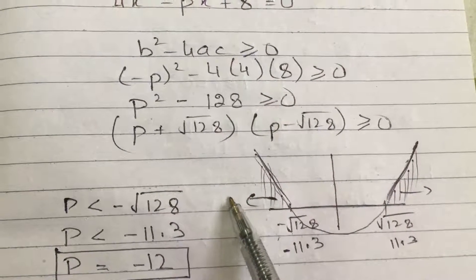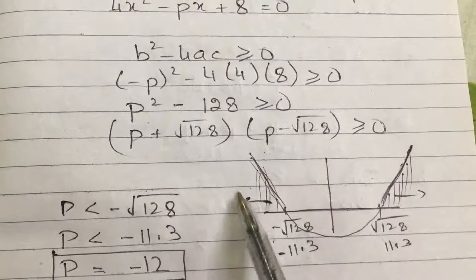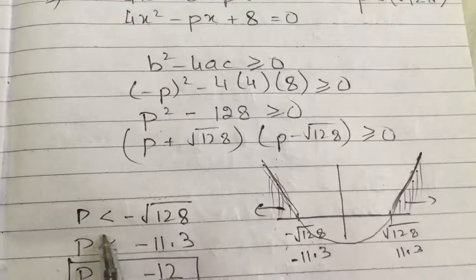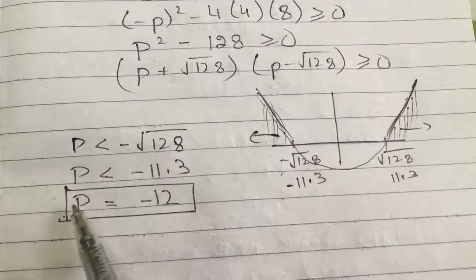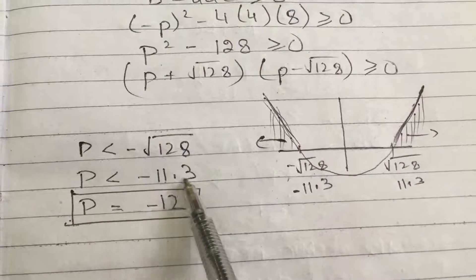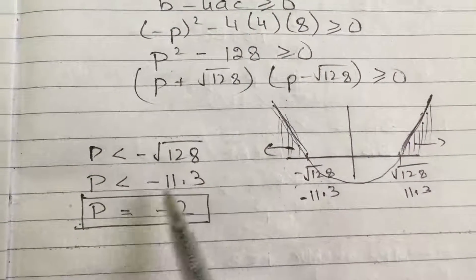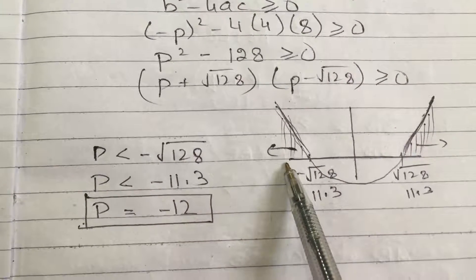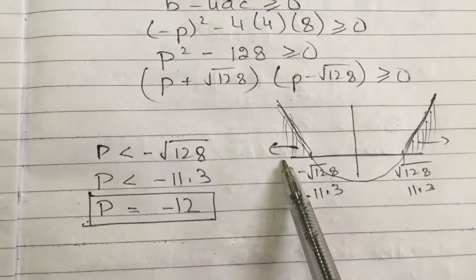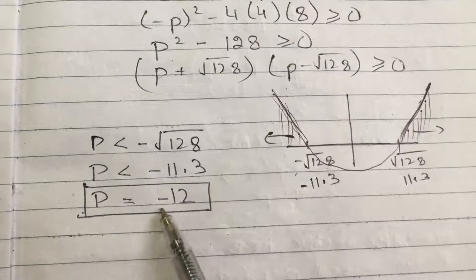So the question is asking the largest negative integer. So I will consider only this part. So p less than minus root 128, which means p less than minus 11.3. So the rest of the integers are on this side. The largest integer, negative integer, will be minus 12. Therefore, the value of p is minus 12.